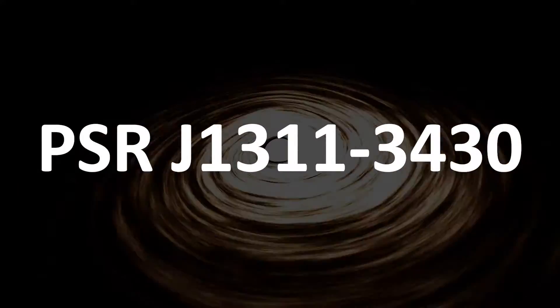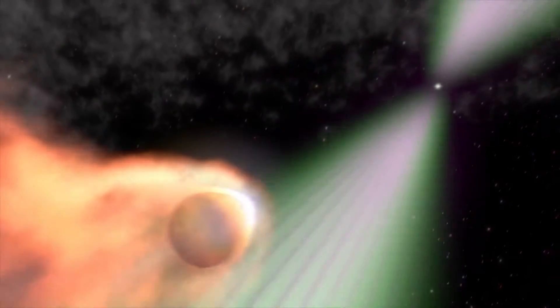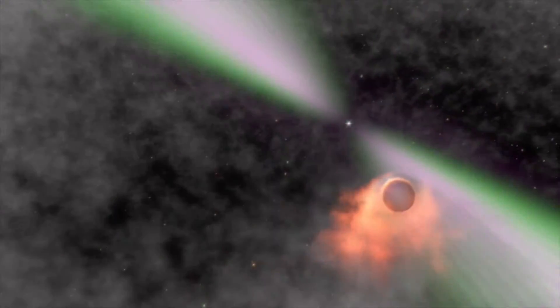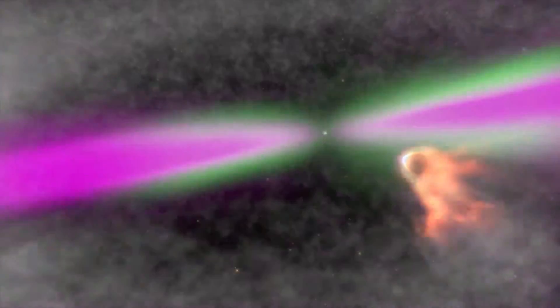Today we are going to visit the Black Widow pulsar. It has a spin period of 2.5 milliseconds. It even has a companion, and a pulsar is definitely a dangerous partner to have.